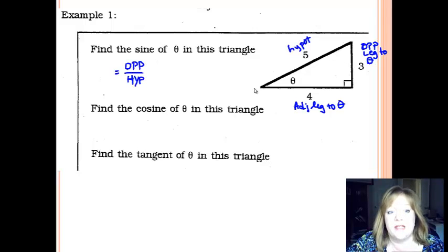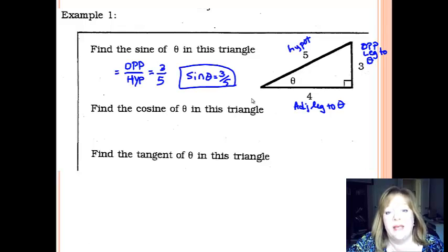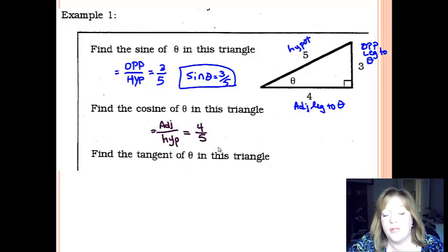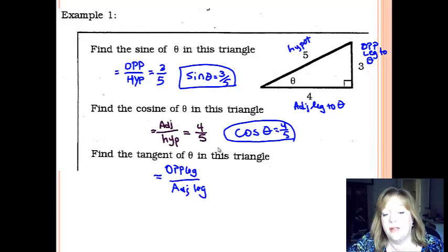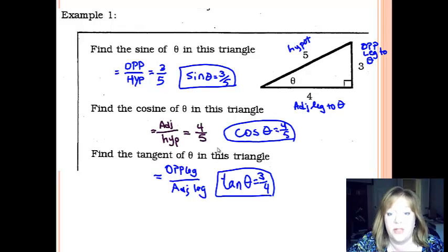So the sine is defined to be opposite over hypotenuse. Opposite is three, hypotenuse is five, so you plug that in. So the sine of theta is three-fifths. Cosine is defined to be the adjacent leg over the hypotenuse, so it's going to be four-fifths. And tangent is the ratio of the legs, opposite over adjacent. So that's just going to be three-fourths. So there's your first three trig ratios.